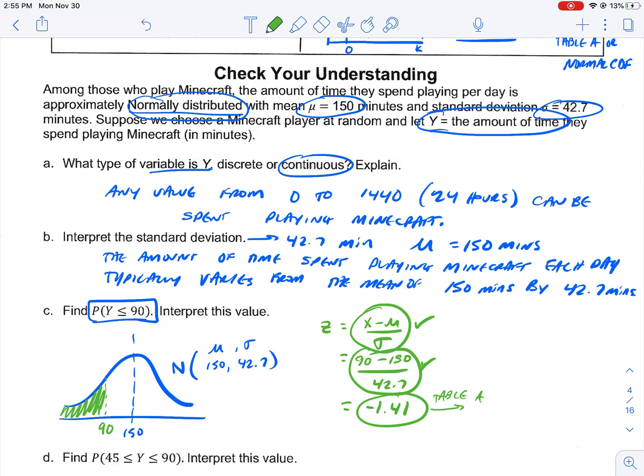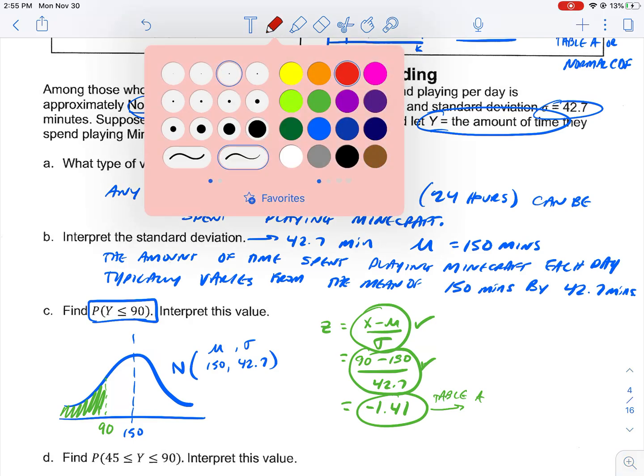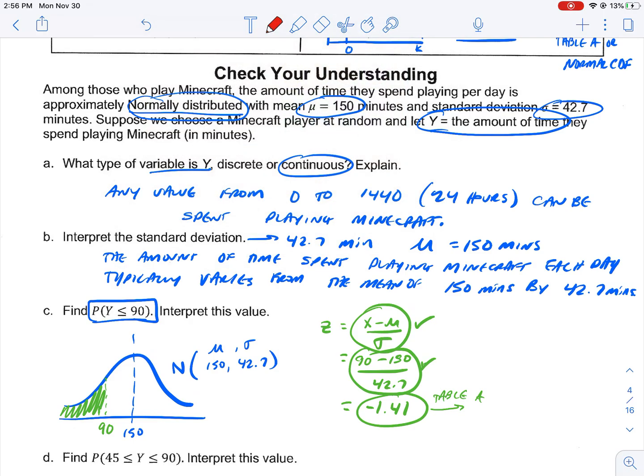And remember, when you go to table A, you find that z-score on there. And the table A z-score that it gives me is 0.0793. And that would be a 7.93% chance. So, when I interpret this value,